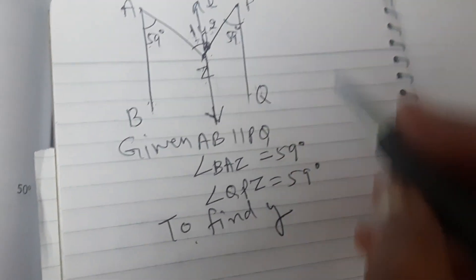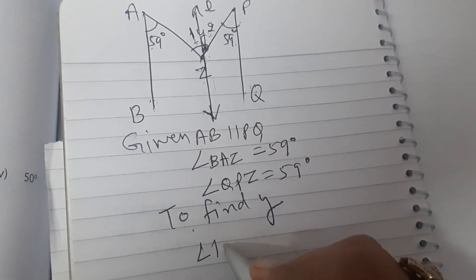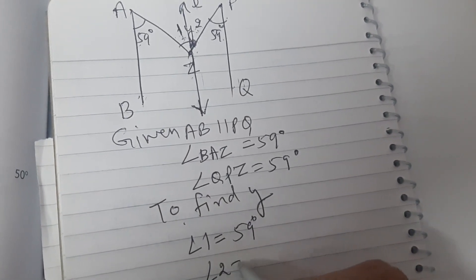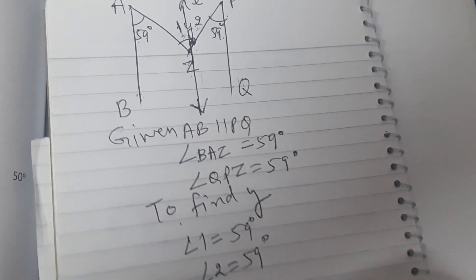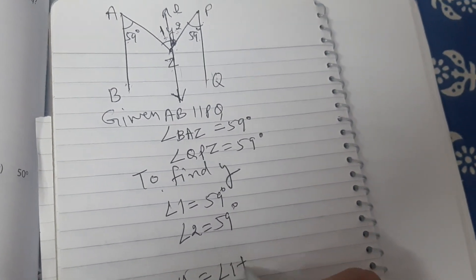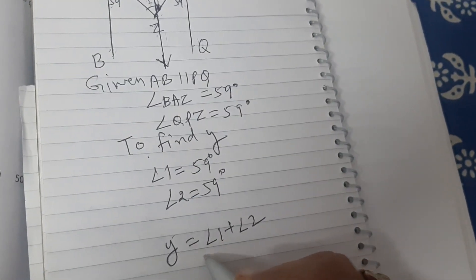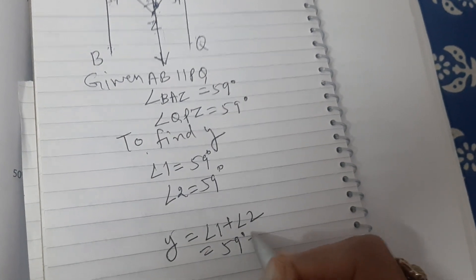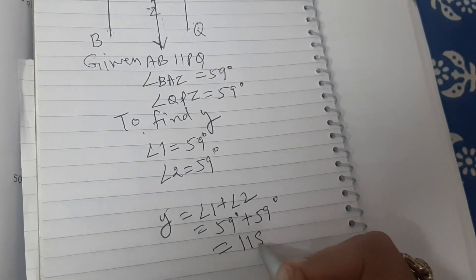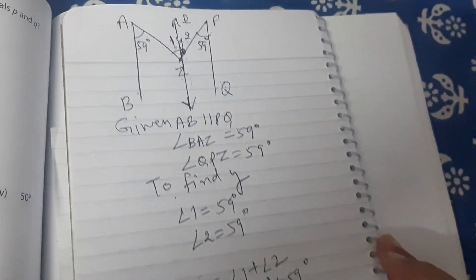So we have angle 1, 59 degrees, angle 2 is also 59 degrees, and what is Y? Angle 1 plus angle 2, that means 59 degrees plus 59 degrees, which is equal to 118 degrees.